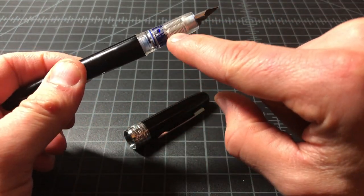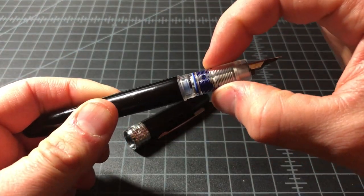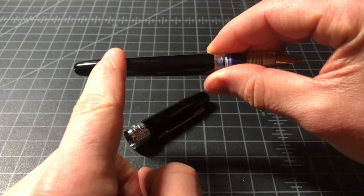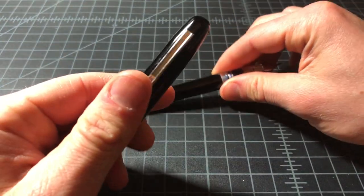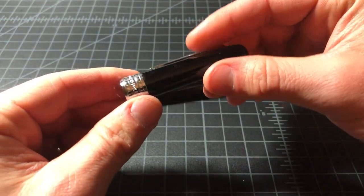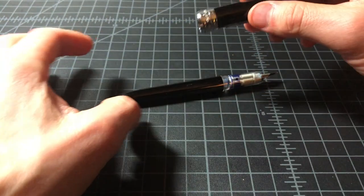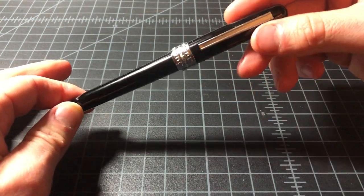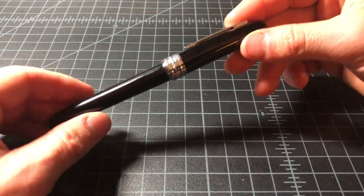The feed area and the section, the part you hold, those are still plastic, but the body and the cap are metal. So you get a classiness to it. This is in a mirrored black, which I think is really quite nice. It picks up some fingerprints, but that kind of comes with the territory.